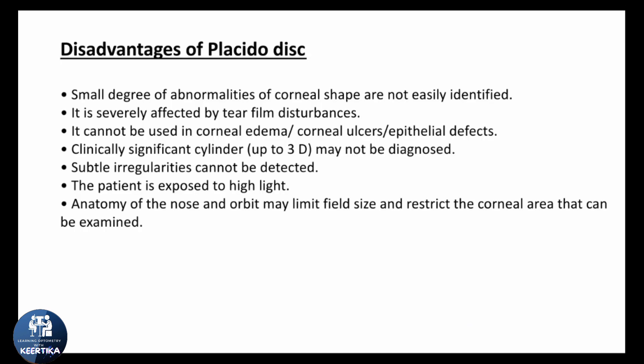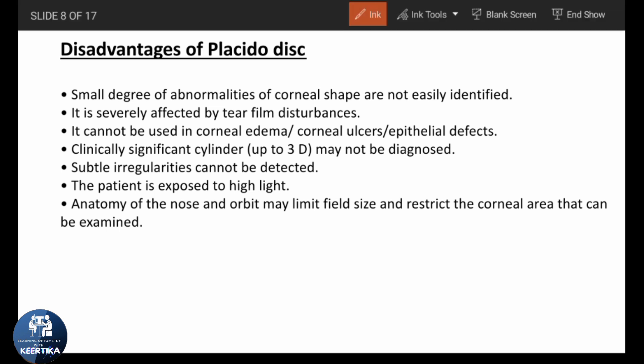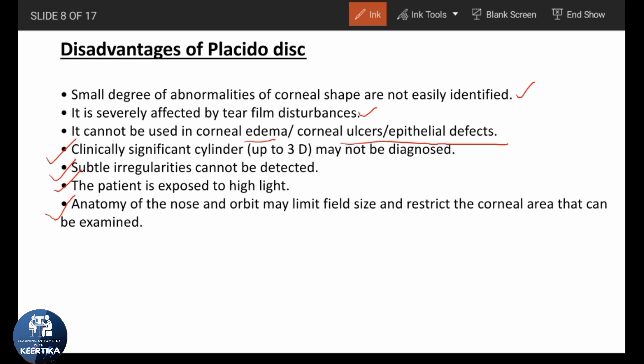In spite of its advantages, Placido disc has many disadvantages. Small degrees of abnormalities in corneal shape cannot be easily identified. It is severely affected by tear film disturbances, since the reflections come from the tear film — in patients with poor tear film, distorted mire will not give correct information about anterior surface curvature. It cannot be used in corneal edema, corneal ulcers, or epithelial defects. Clinically significant cylinder up to 3 diopters may not be diagnosed. Subtle irregularities cannot be detected. The patient is exposed to high light during the procedure. Additionally, anatomy of the nose and orbit may limit field size and restrict the corneal area that can be examined.